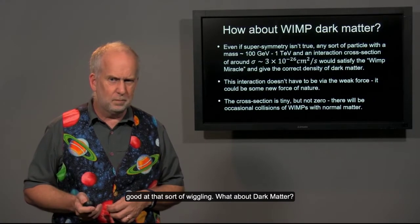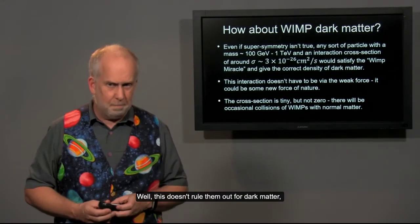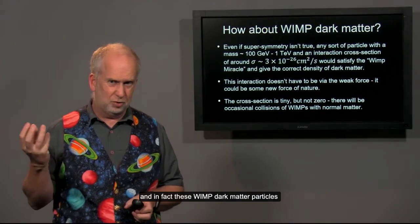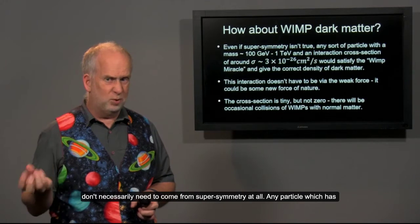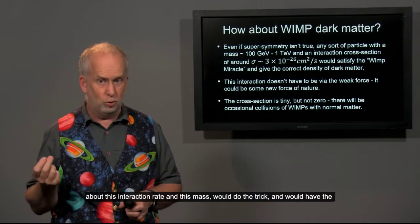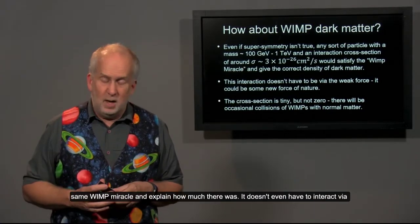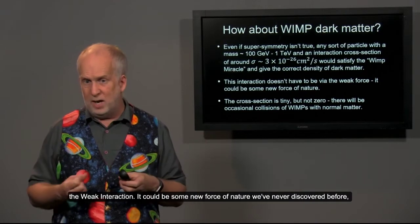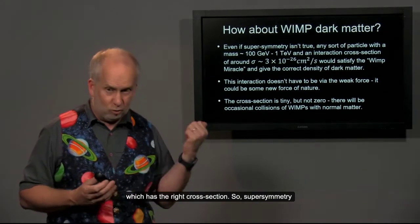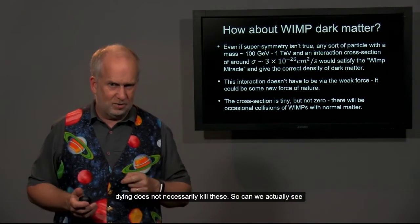What about dark matter? Well, this doesn't rule out WIMP dark matter. And in fact, these WIMP dark matter particles don't necessarily have to come from supersymmetry at all. Any particle which has about this interaction rate and this mass would do the trick, and would have the same WIMP miracle and explain how much there was. It doesn't even have to interact via the weak interaction. It could be some new force of nature we've never discovered before, which has the right cross-section.